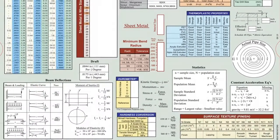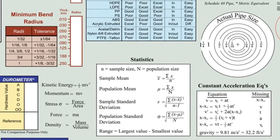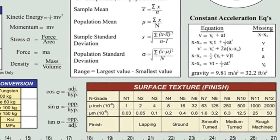In the lower right, you'll see tables showing constant acceleration formulas and basic statistic formulas. Below those is a conversion table for different surface finishes, or surface texture call-outs, and the machine operation required to achieve each finish.